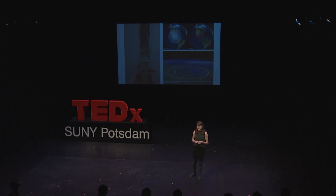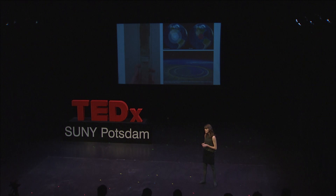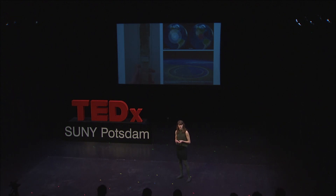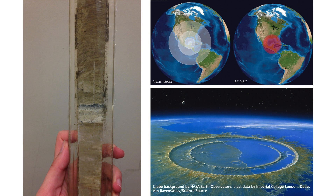Perhaps most notable among these is something called the iridium anomaly. Iridium is an element that is rare on Earth but actually quite common in extraterrestrial material. In sediments that mark the end of the Cretaceous we see a peak in the concentration of iridium. Here I am in this photo holding a core of rock that records that boundary. See the white layer there — it represents the seconds, minutes, and hours following the impact. The fact that we can get such a detailed record of time from 66 million years ago is absolutely amazing and why I love geology.